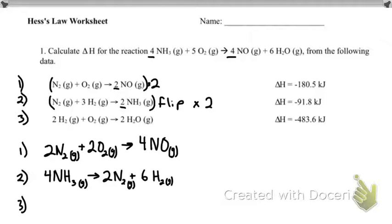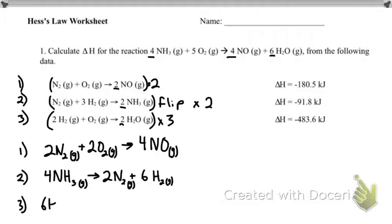Last reaction — it looks like I need six water molecules on the product side. Here I have only two water molecules on the product side, so I'll multiply that whole reaction by three and write it down below.